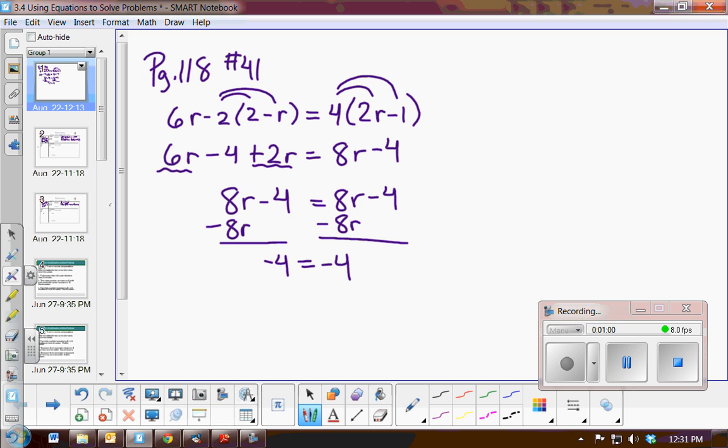What that's telling me is that no matter what value I use for r, this equation will be true. So the solution is all real numbers. Your book says identity in the back. That means the same thing. Any number I choose will make this equation true.